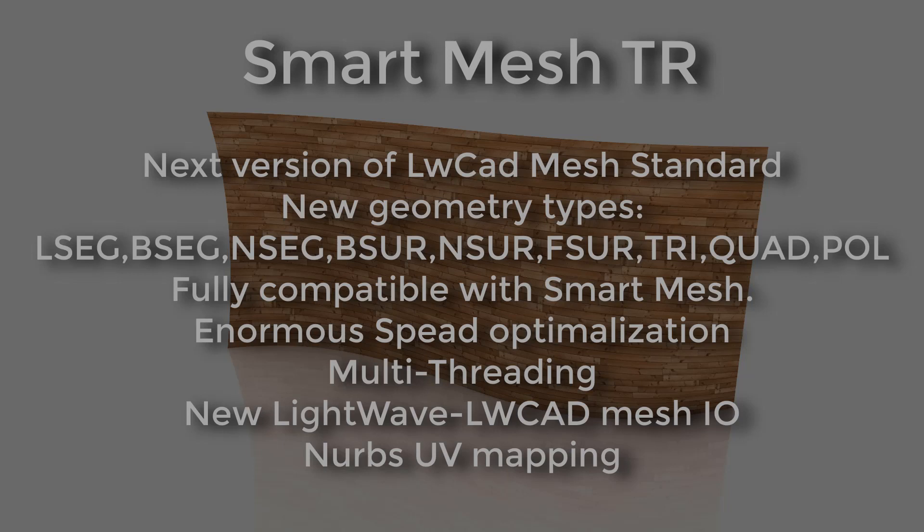It is fully compatible with previous SmartMesh but the new version is way much faster — it has enormous speed optimization, faster 10 to 1000 times depending on the tool and objects. It also supports multi-threading now. It has a completely new Lightwave to LightwaveCat mesh input/output, so it is reading and writing geometry between Lightwave and LightwaveCat way much faster. And finally it has NURPS UV Mapping also for NURPS surfaces.